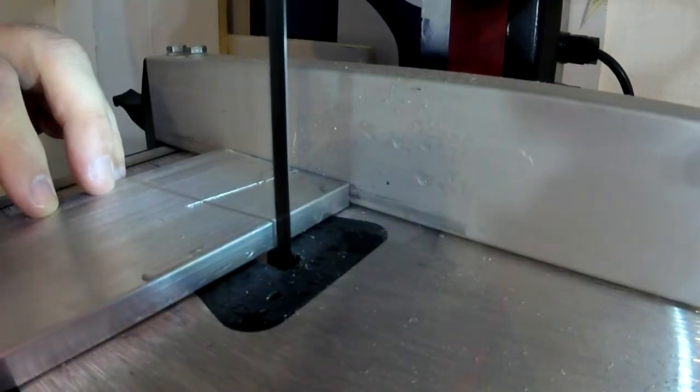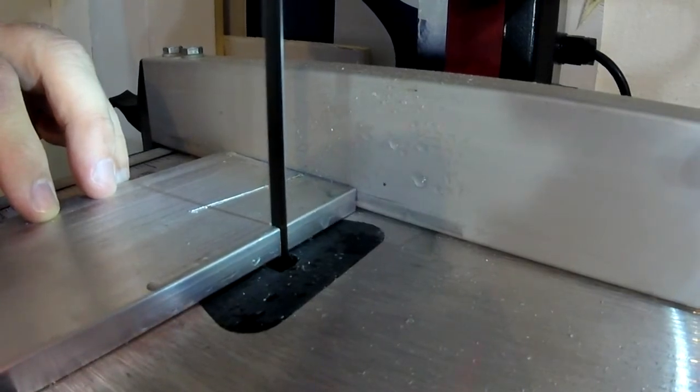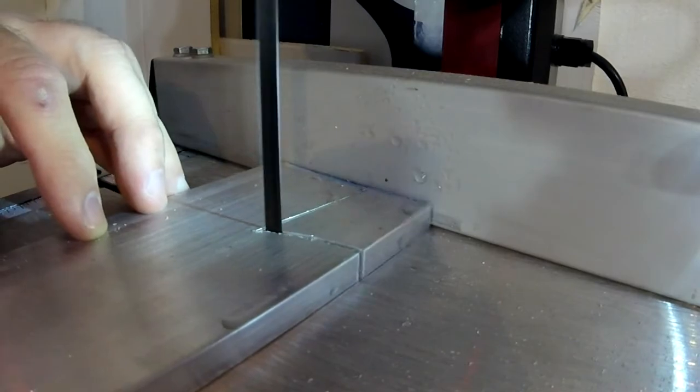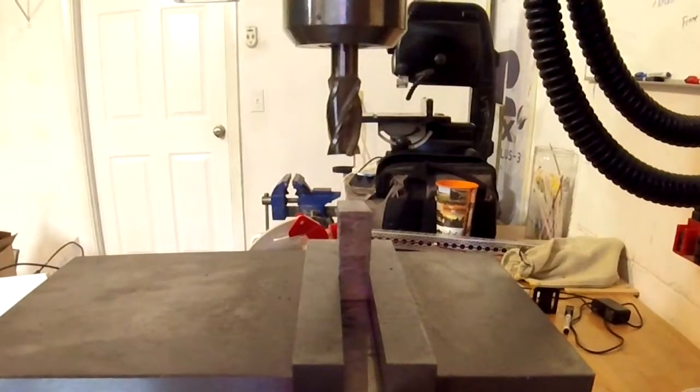I cut that on a lathe, and the best way to do it would have been to use the tailstock and drill it that way, but mine wasn't lined up real well, so I decided to instead make a fixture for my milling machine.